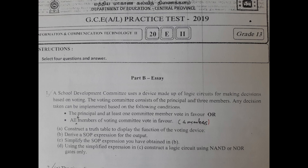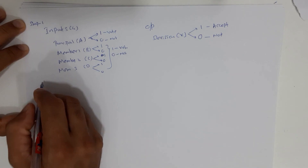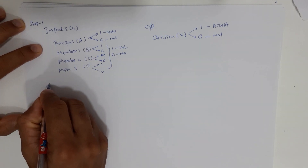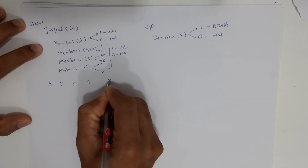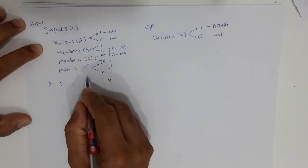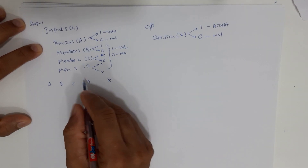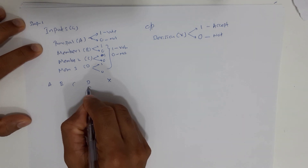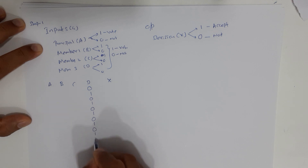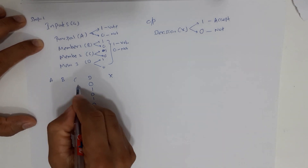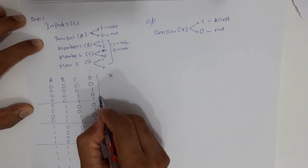Part A of the question asks us to construct a truth table to display the function of the voting device. Going to the truth table, there are 4 inputs labeled A, B, C, D and only one output X. Since we have 4 inputs, there should be 16 rows. Rows 1 through 16 are filled in, completing the input side of the truth table.